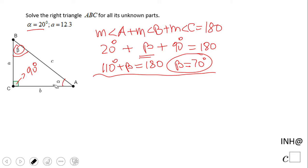We now have all the angles. Let's move to the sides. Let me put these angles here: this is 70, this is 20, and we have 12.3. Let me draw the triangle: 20 degrees, 70 degrees, 12.3, this is a right angle.